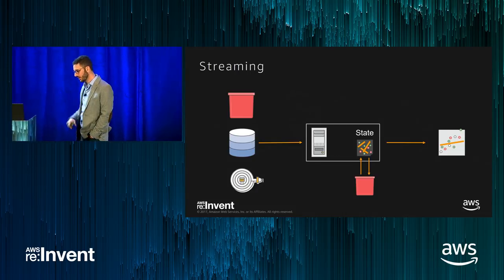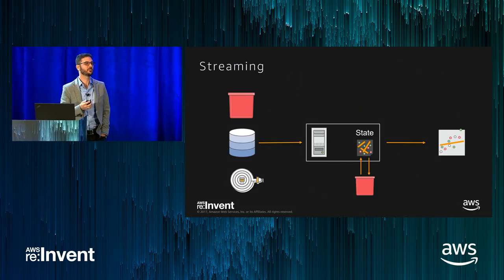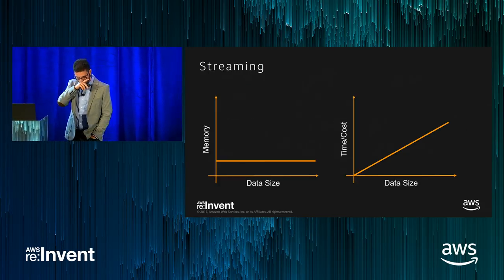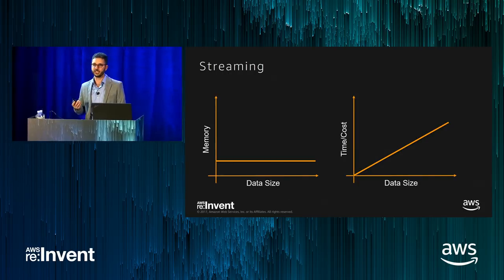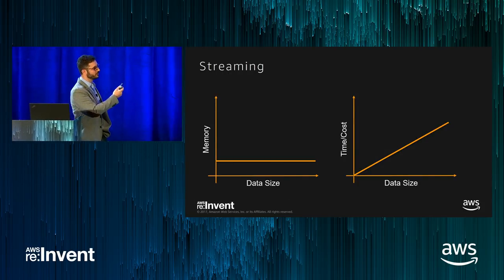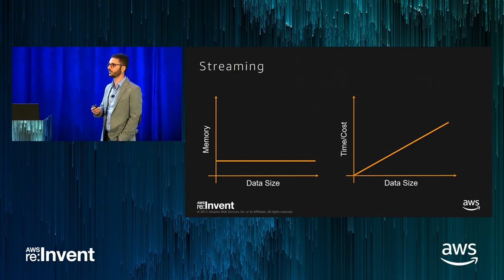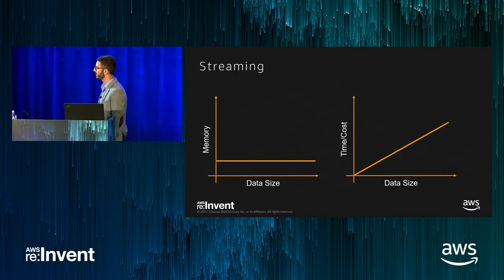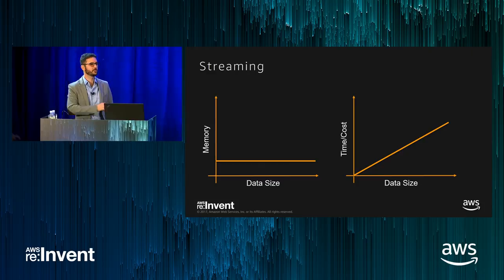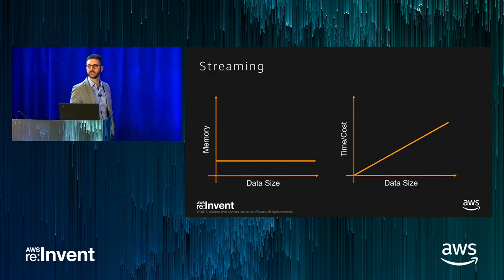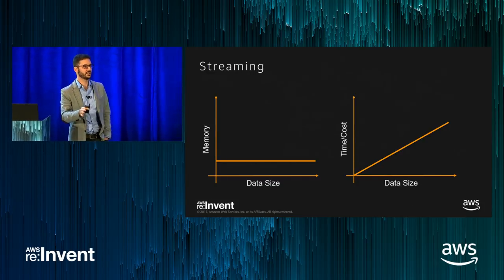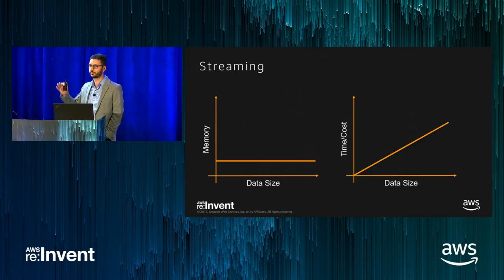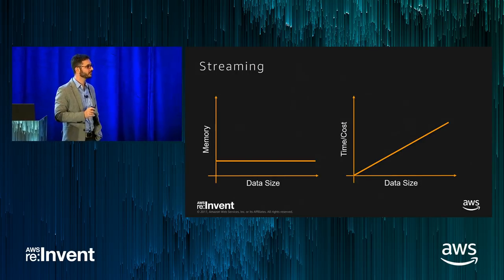The engineering advantages are amazing. Memory footprint is fixed — it doesn't matter if it's the first or the hundredth gigabyte you stream through. Moreover, runtime and cost scale exactly linearly with data. If you trained on a terabyte and it costs $12, using another terabyte costs exactly $12 more — it won't explode or behave in some weird way. That predictability is really important.